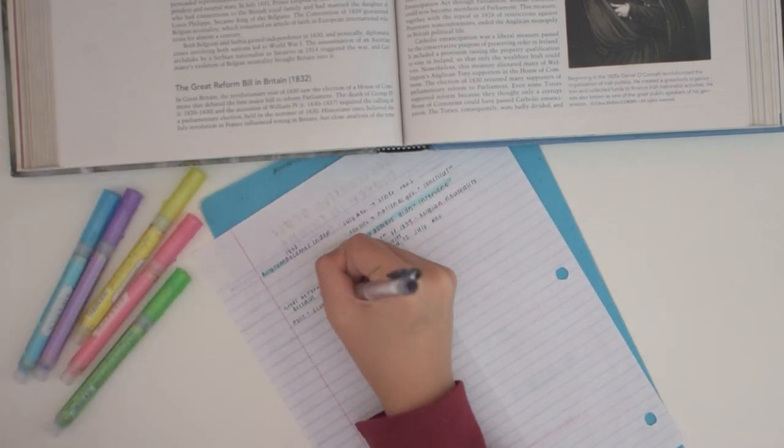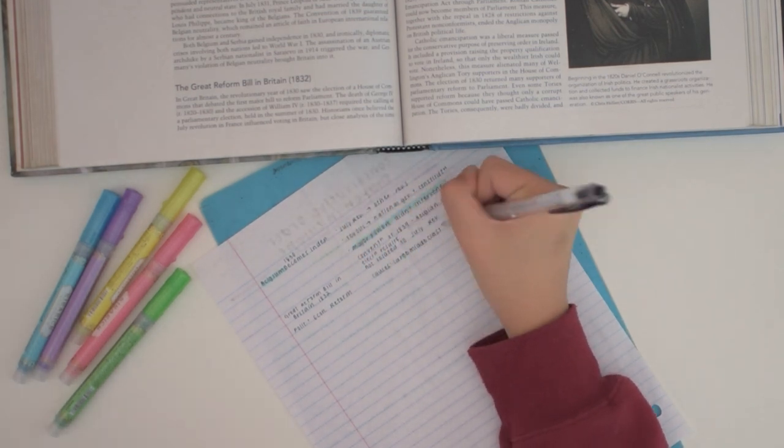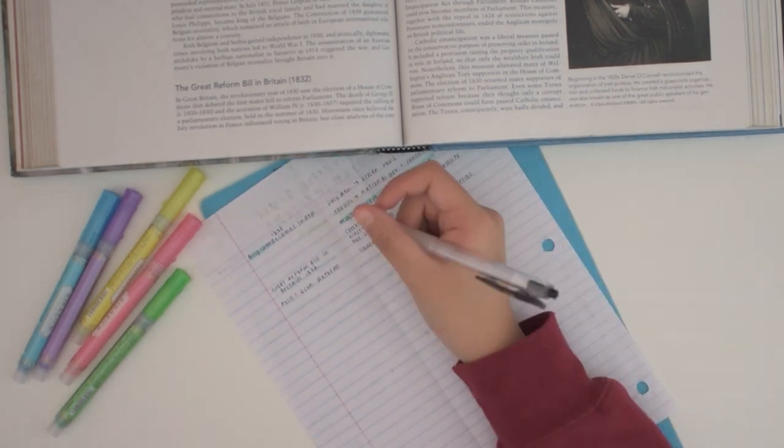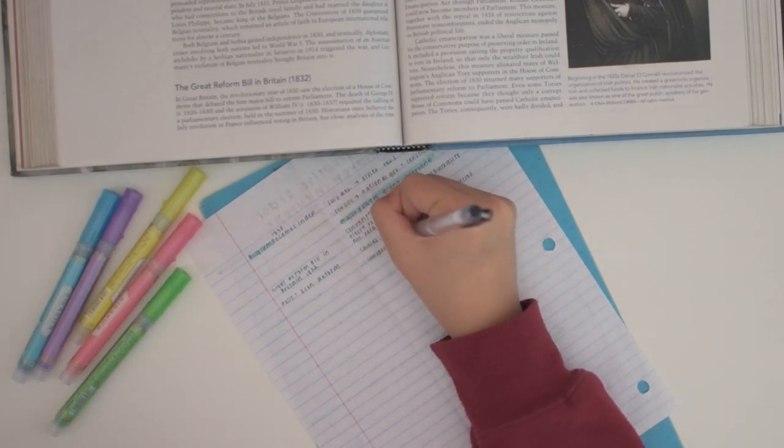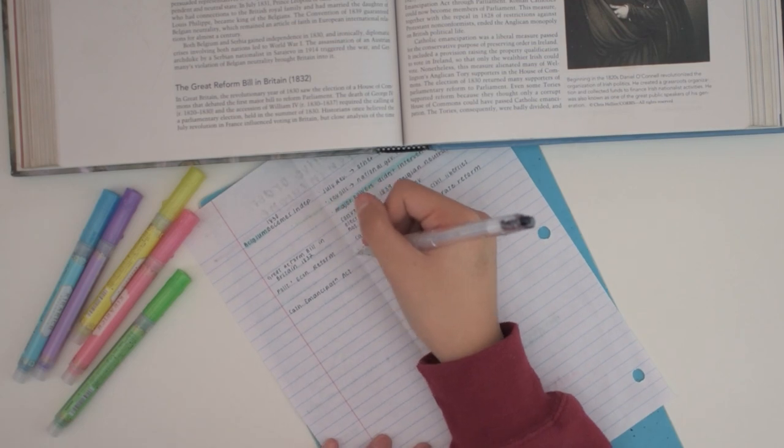Where do you get your stationery? I mostly get my stationery from jetpens.com. Not sponsored, I just really like them. I like them so much that I actually interned there, so that was pretty cool. I also occasionally buy from Amazon or Target.